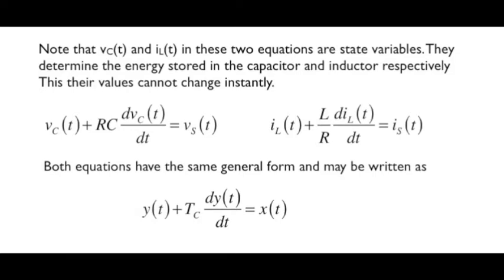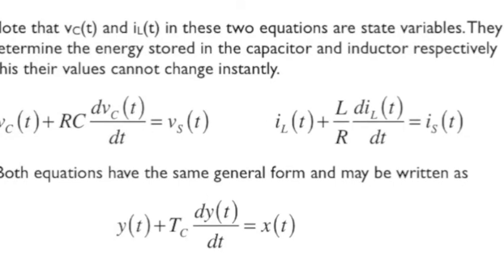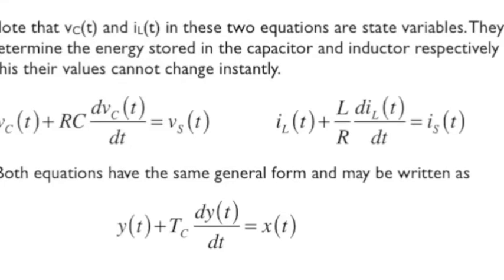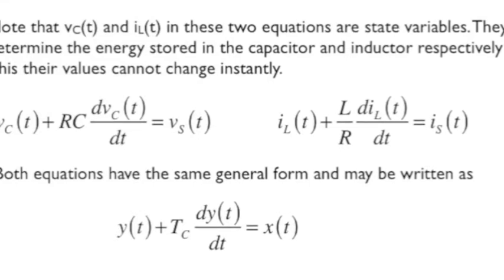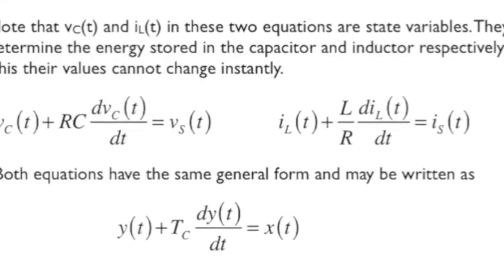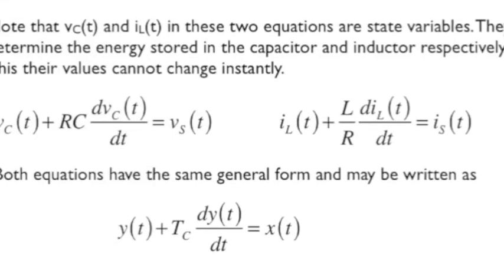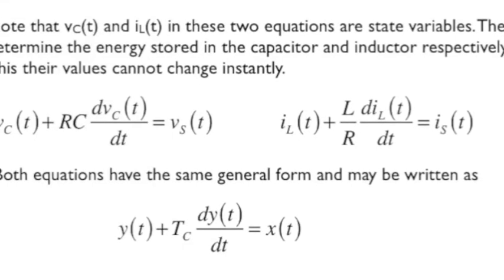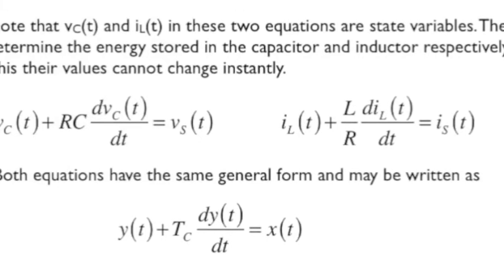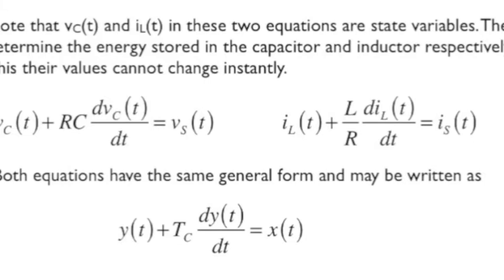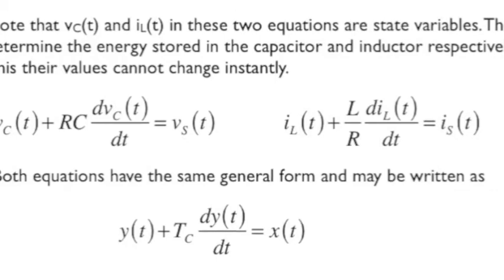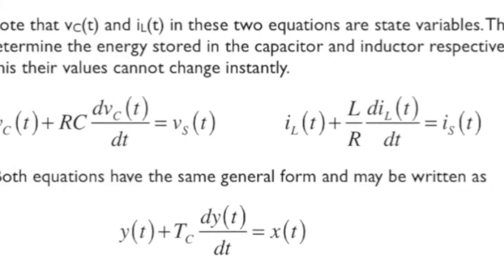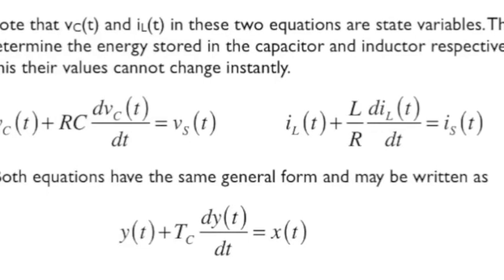For inductor, the energy is one-half L times IL squared. I sub L is the state variable. Looking at the equation on the bottom of the screen, both the first-order RC and first-order RL equation are of the same general form. On one side of the equal sign, we have a source of electrical energy, either a voltage source or a current source. This is referred to here as x(t). It could be a step function, ramp function, sinusoidal, etc. The y(t) that we see appearing on the other side of the equal sign is a state variable, either the voltage across the capacitor or the current through the inductor. And tc, which we will see later corresponds to a time constant, is either R times C or L divided by R.